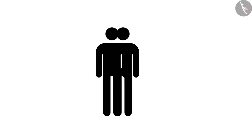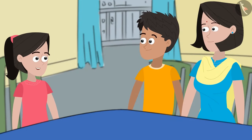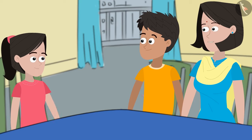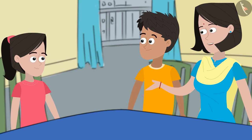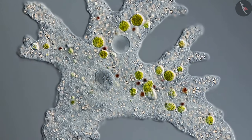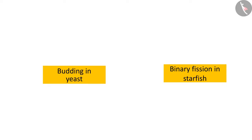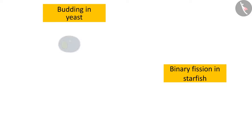Imagine how cool it would be if you were able to split apart on your own and form a clone of yourself. I am not too sure about that. How can animals clone themselves? Not all animals do that. However, a fragment of animals have the capability to reproduce asexually, like hydra and amoeba. The offspring or the young one is formed through budding or binary fission of the body and is exactly like the parent.